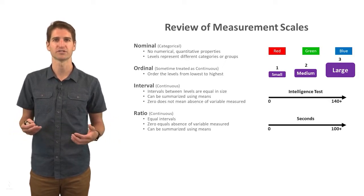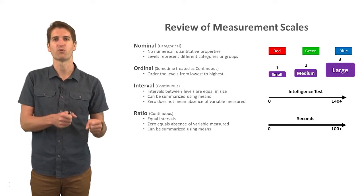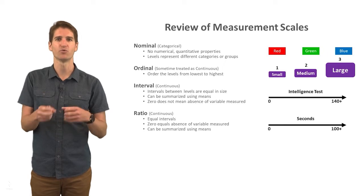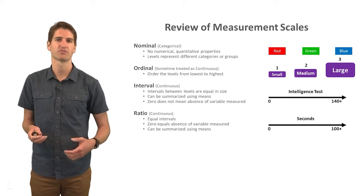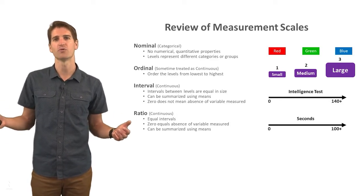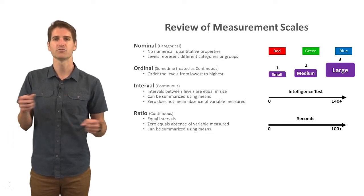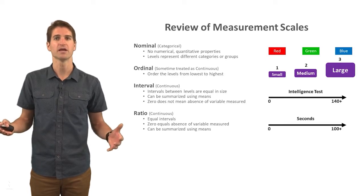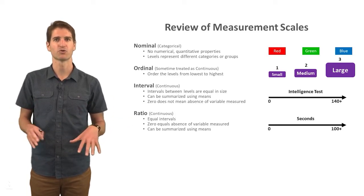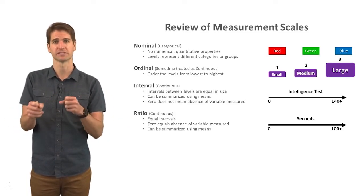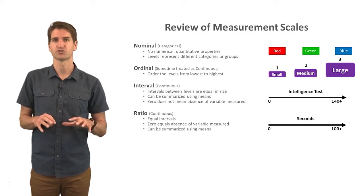You can think of nominal as being categorical in nature, meaning they don't have any inherent numeric properties. Rather, we can count how many people or things or cases fall within each level of that particular nominal variable — for instance, let's count how many people have a red shirt on, a green shirt on, and a blue shirt on. There's no inherent numeric qualities or properties here; red is not higher than green, blue is not higher than red. We're simply talking about different levels or categories, which is why a nominal variable is sometimes referred to as a categorical variable.